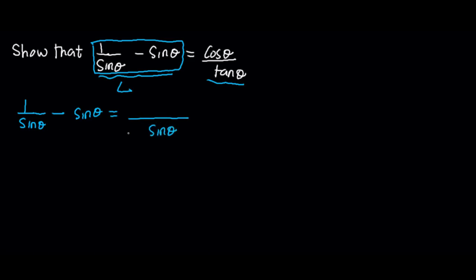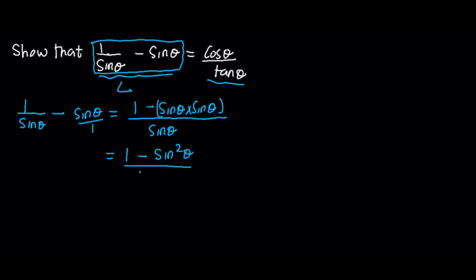So, sin theta divided by sin theta gives us 1. 1 times 1 is 1. So, 1 minus — this is over 1. So, sin theta divided by 1 is sin theta, times sin theta gives us sin squared theta. And so this is the same as 1 minus sin squared theta, all on sin theta.